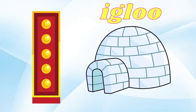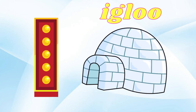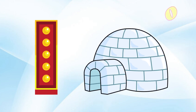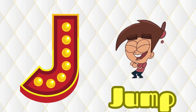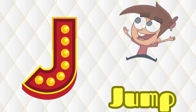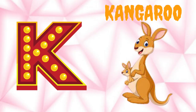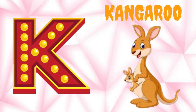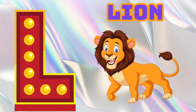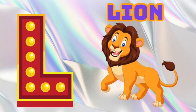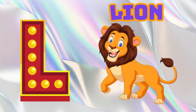I is for Igloo, I-I-Igloo. J is for Jump, J-J-Jump. K is for Kangaroo, K-K-Kangaroo. L is for Lion, L-L-Lion.